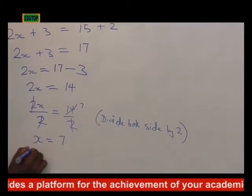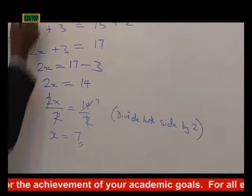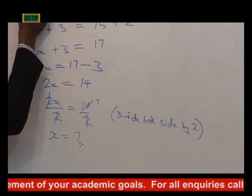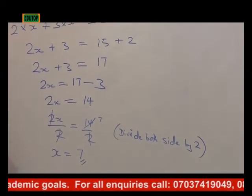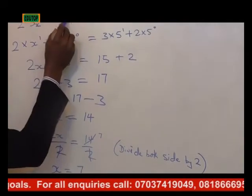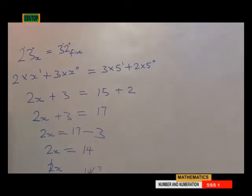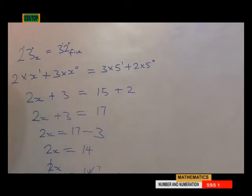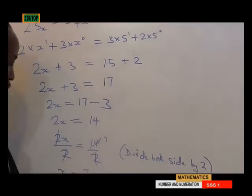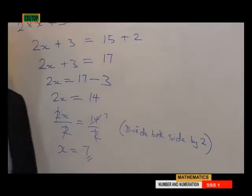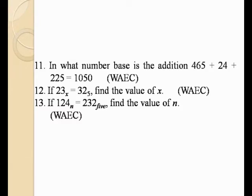So this gives us the value of x. That is, 23 base 7 is equal to 32 base 5. Which gives us our final answer — the value of x is 7. Question number 13.